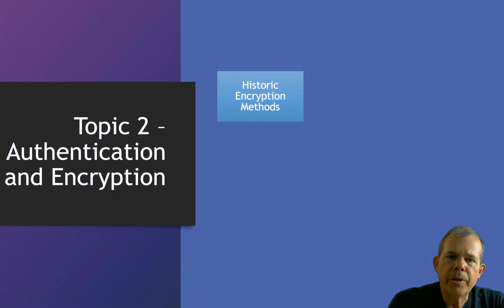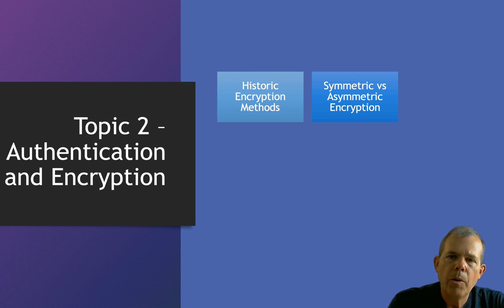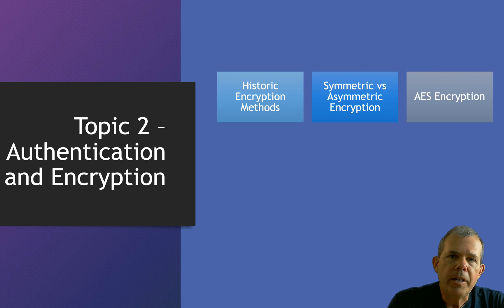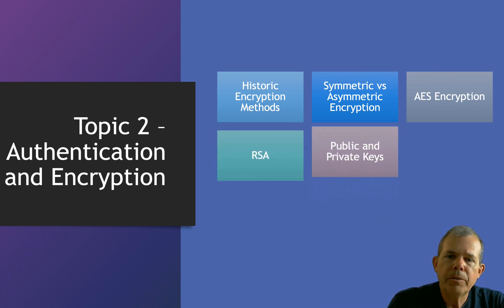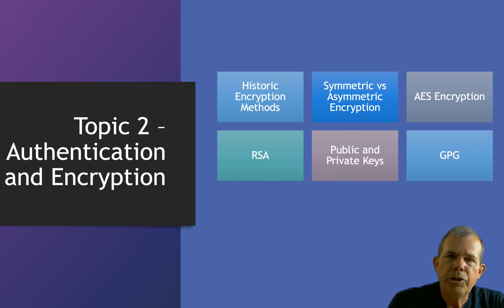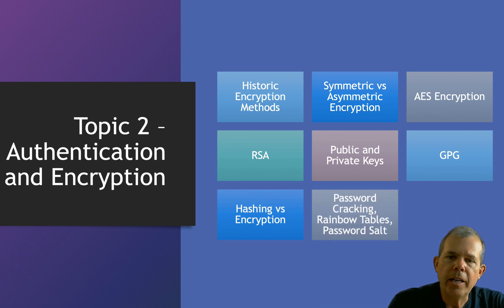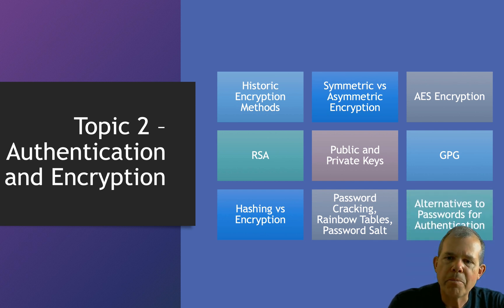In unit number two, we're going to talk about historical things that were done in the past, even before computers, to encrypt data. We'll talk about the difference between symmetric and asymmetric encryption, the algorithm AES, RSA encryption, and public and private keys. We'll use GPG, a utility to encrypt your messages, and we'll talk about the difference between hashing and encryption. We'll try to do some password cracking and talk about rainbow tables and salting your passwords.